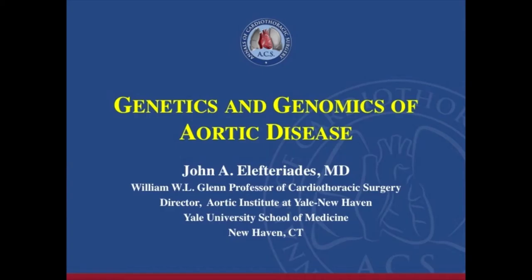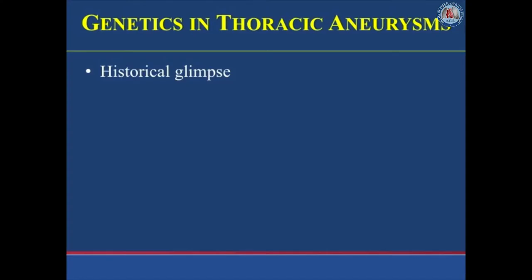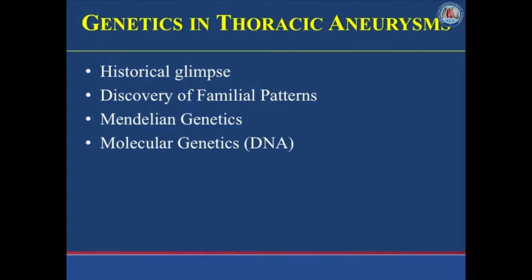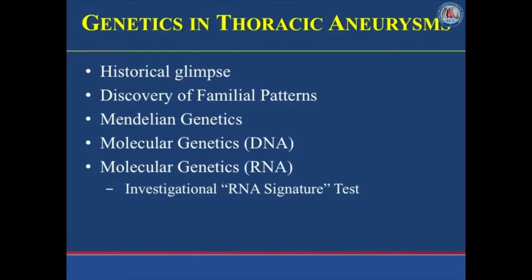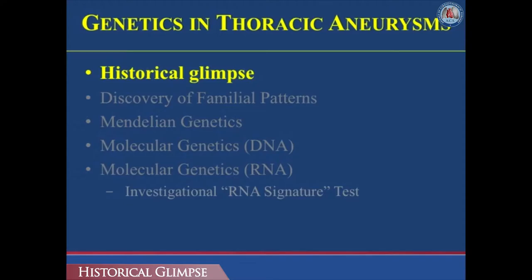This is Dr. John Lefteriatis from the Aortic Institute at Yale University School of Medicine, and I would like to provide a common-sense overview of the genetics and genomics of thoracic aortic disease. I will start with the history of the genetics of thoracic aortic aneurysm, move on to familial patterns, then cover Mendelian genetics, molecular genetics at the DNA level, and finish with molecular genetics at the RNA level, including a promising investigational RNA signature test we have been developing at Yale University.